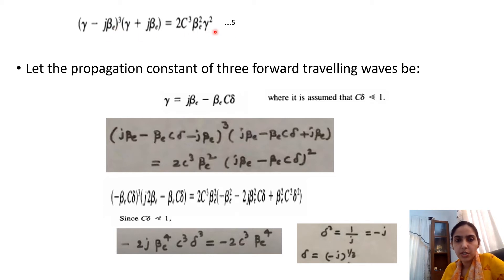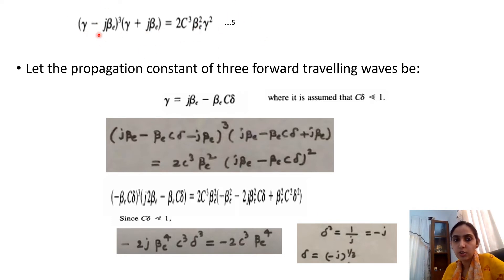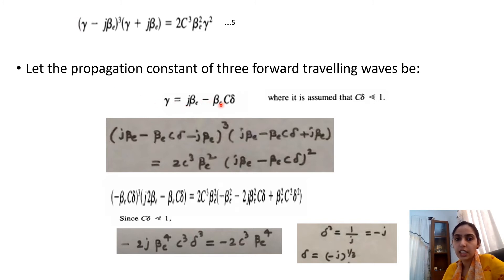Observing the fifth equation, the cubed term indicates three waves of the form e^(−jβEz) — three forward travelling waves — and the remaining factor (γ + jβE) corresponds to one backward travelling wave of the form e^(+jβEz). So from this expression we conclude there are three forward travelling waves and one backward travelling wave in the negative-z direction.